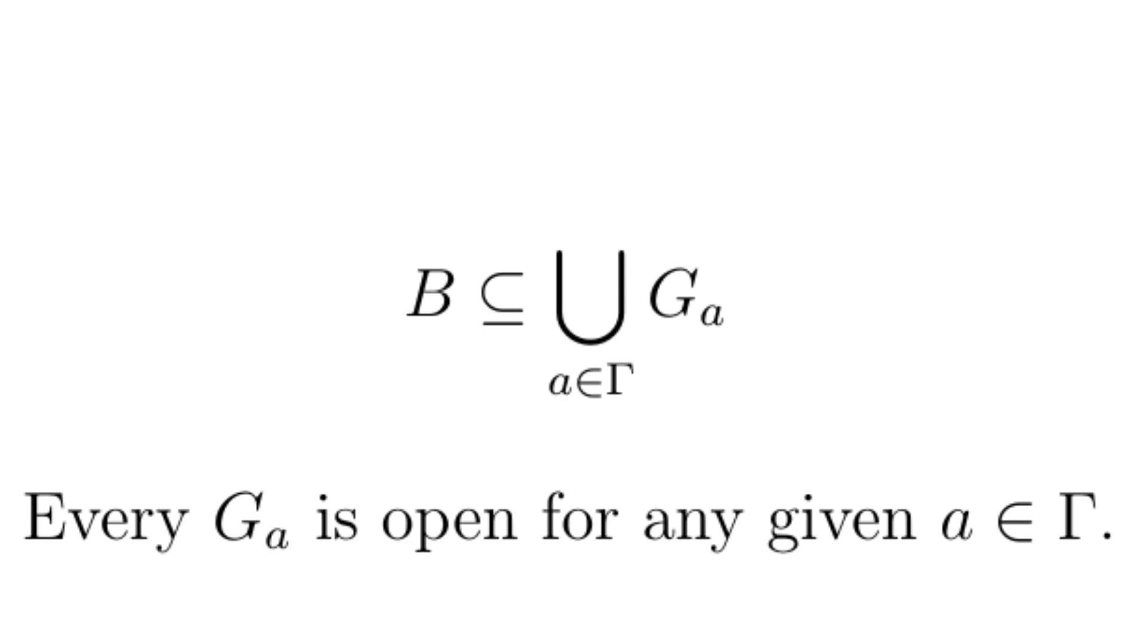So if I have a set B, if B has an open cover, I can write B as a subset of this union, the union of all the sets G_a, each of which are open for each given index a. If B is compact, then I can say B is a subset of G_1 union and so on union G_N for a finite number of sets. In this case, there would be exactly N sets. The thing to keep in mind about compactness is the motion from the infinite to the finite.